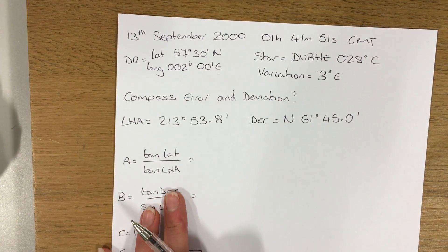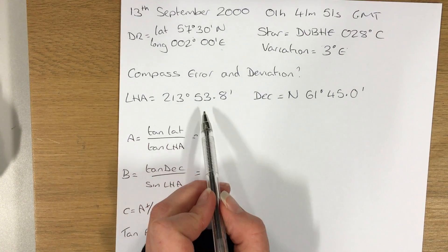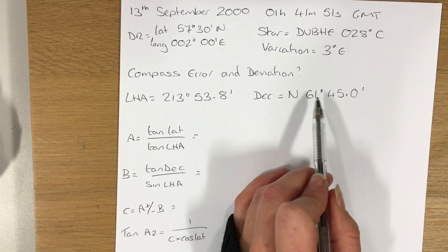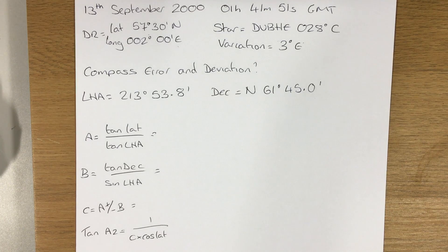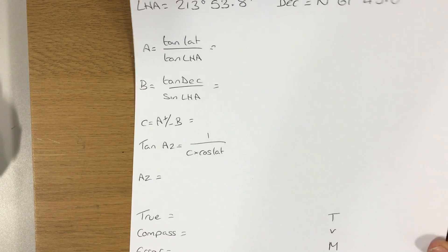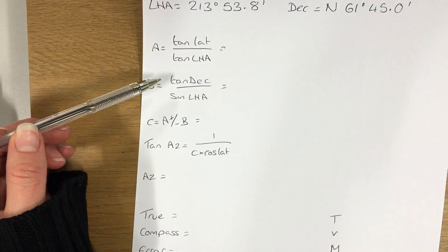The variation for my position was 3 degrees east, so I'm looking for my compass error and deviation. I've already calculated the LHA and declination. If you need help with that, then have a look at the video tutorial on finding GHA, LHA, and declination.